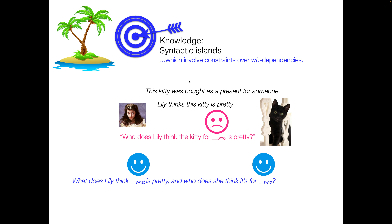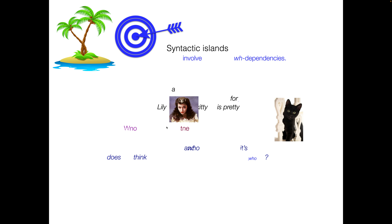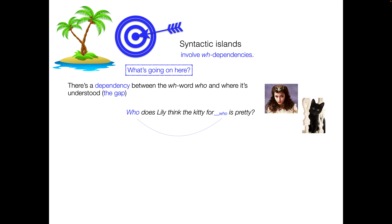As a reminder, if we have a kitty who was bought as a present for someone and Lily thinks this kitty is pretty, we strongly disprefer: 'Who does Lily think the kitty for is pretty?' — not so great. Versus 'What does Lily think is pretty?' and 'Who does she think it's for?' — this is much better. So we have these preferences; we seem to be constrained in some way against liking this one.